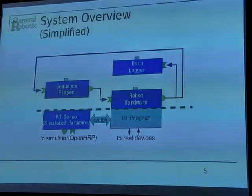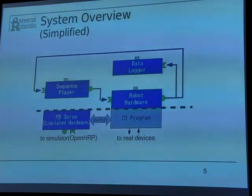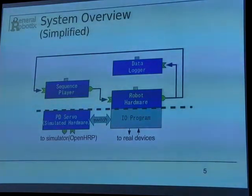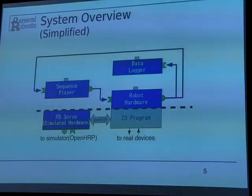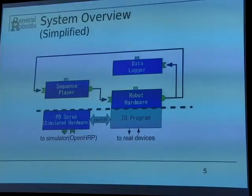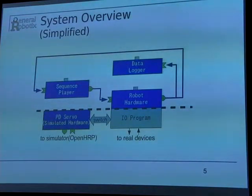This is a simplified version of our controller. The robot hardware component is responsible for calibration, servo switching, and emergency servo stop. All control commands to the robot and all current joint angle data go through this component. The sequence player can accept files with joint trajectory data and feed that, or it can interpolate to the specified joint angles. The data logger keeps a ring buffer log of the data being sent through the data ports. All components have service ports to communicate from external clients.